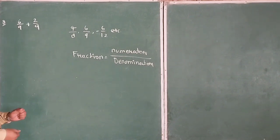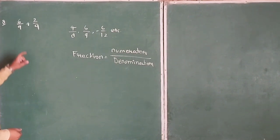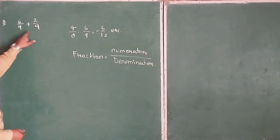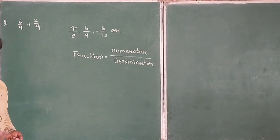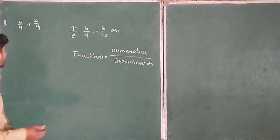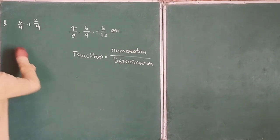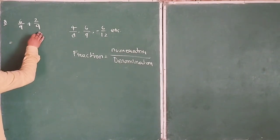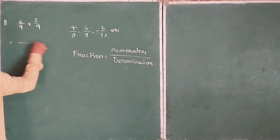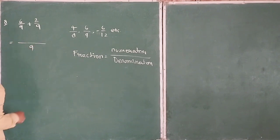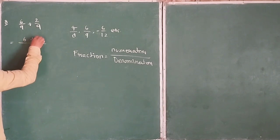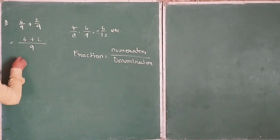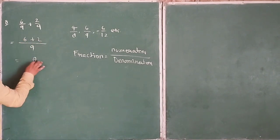Here we see that both fractions have the same denominator. When the denominator is the same, we add only the numerators and write the common denominator. So the numerator gets 6 plus 2, and the answer is 8/9.